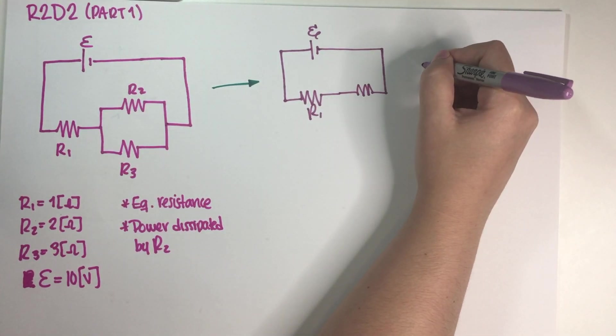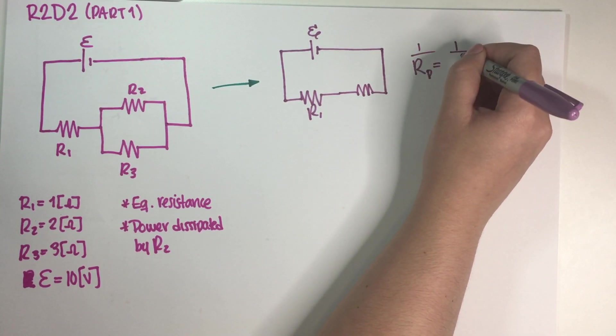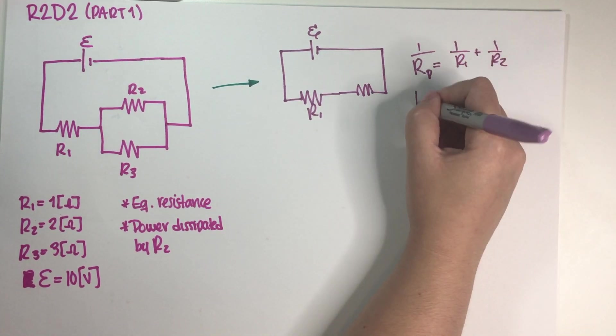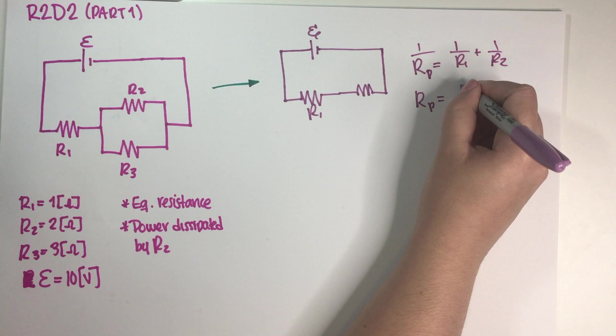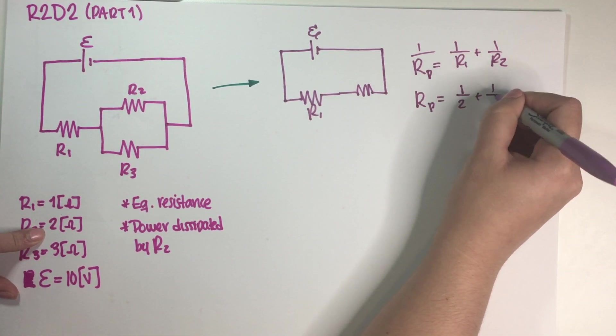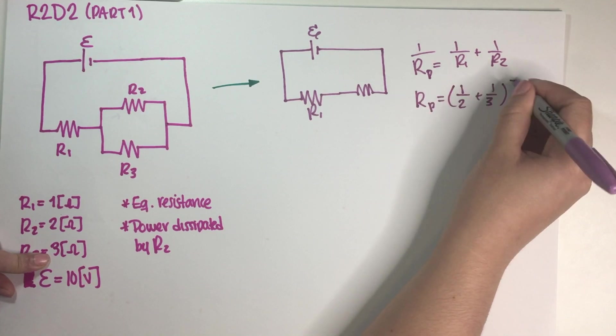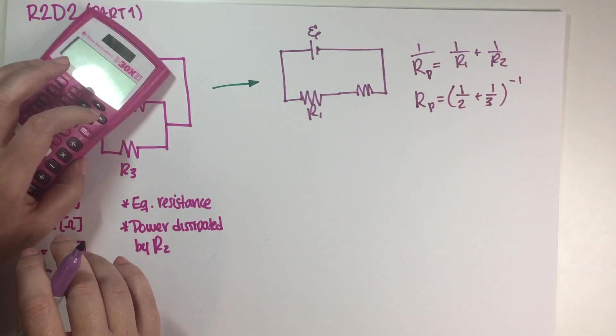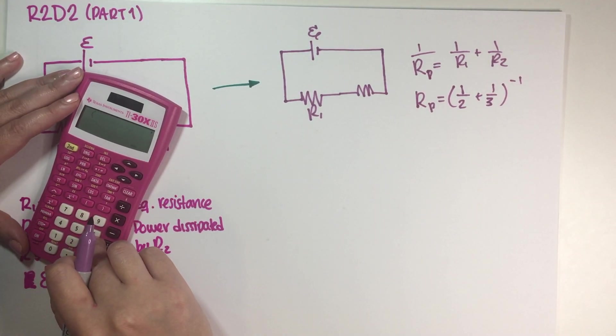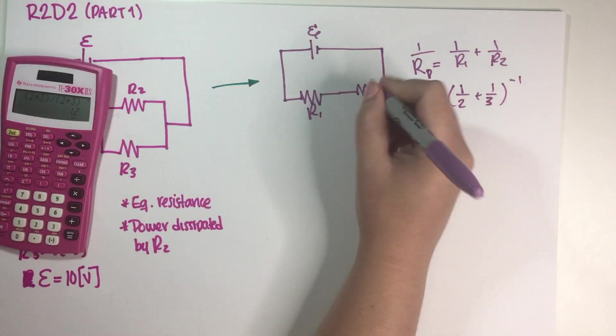But then this guy over here is the parallel combination of these two. Now let's remember that by definition R parallel, 1 over R parallel is equal to 1 over R1 plus 1 over R2. So in this case R parallel is equal to 1 over R2 is 2 plus 1 over 3, and then I have to flip my answer. So let's just go ahead and do that. This is 1 over (1/2 + 1/3) plus R1, which is 1.2 ohms.